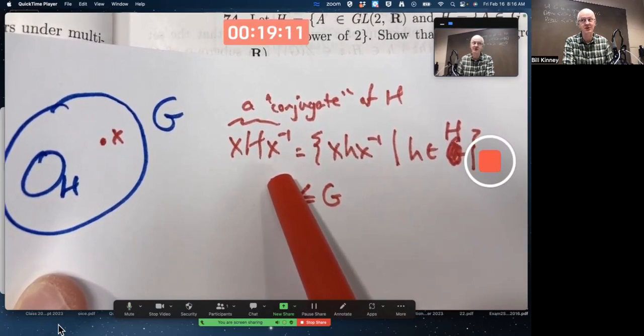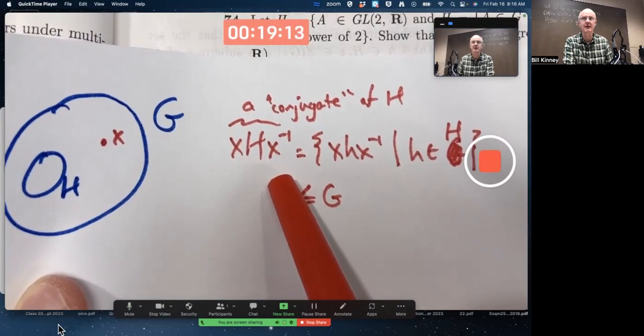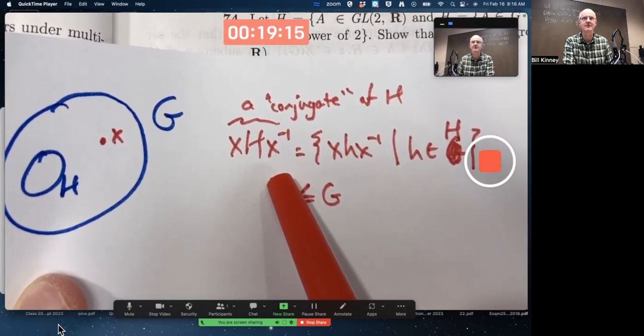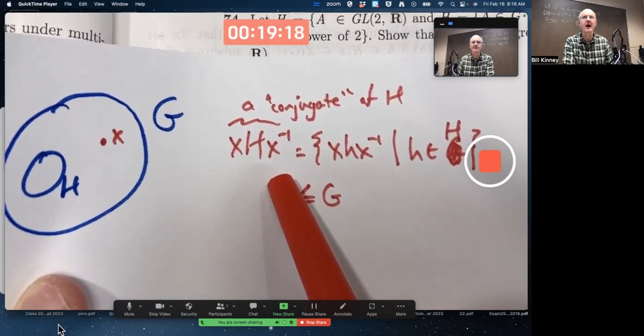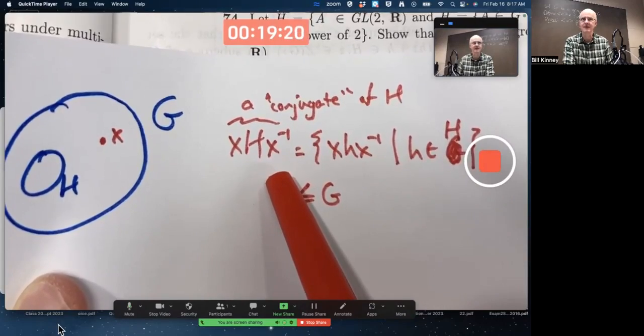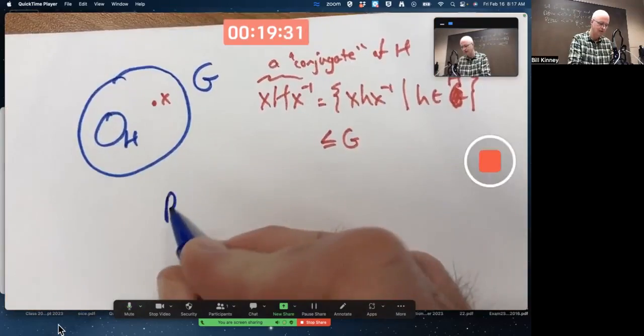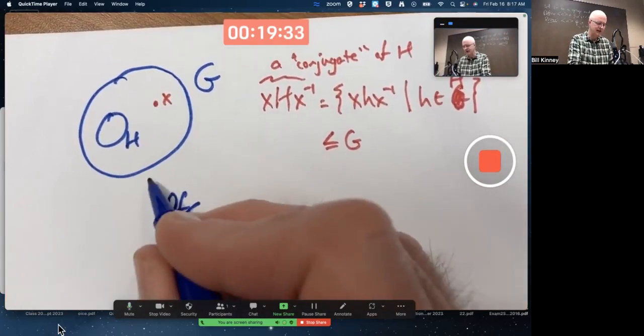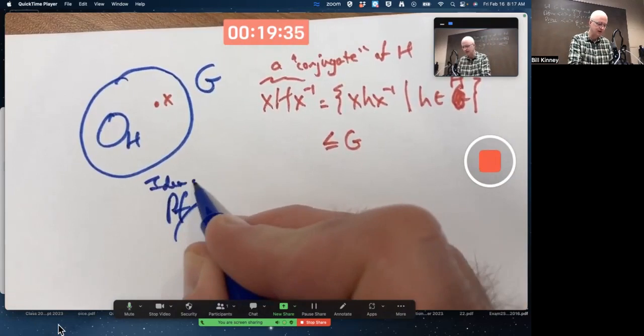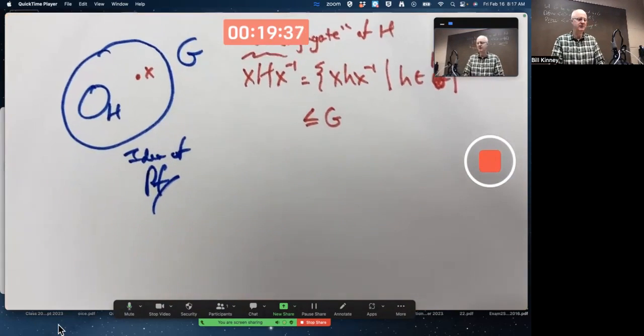But once more for emphasis, this sometimes equals H even if the group is not abelian. And that's actually an important situation that we'll come to, I think it's chapter 7, 8, somewhere in there. 9 actually. So this is an important idea, but we want to prove this is a subgroup. Let's just do the idea of the proof so I won't write things out in excruciating detail.